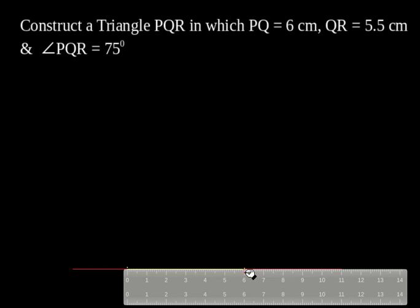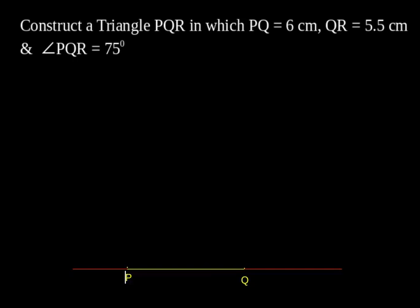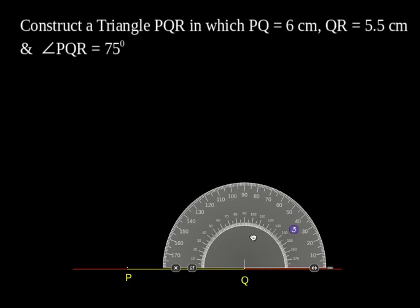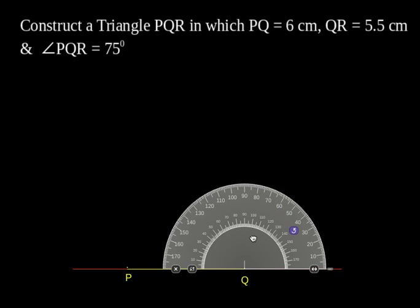With the help of a protractor, mark 75 degree at the point Q. Keep the protractor at the point Q and mark 75 degree.